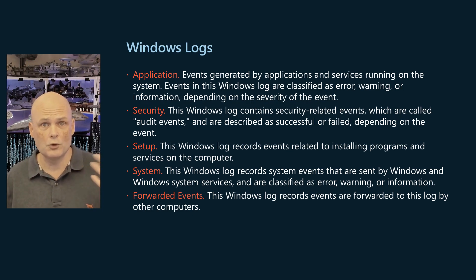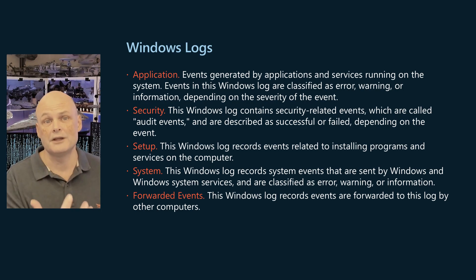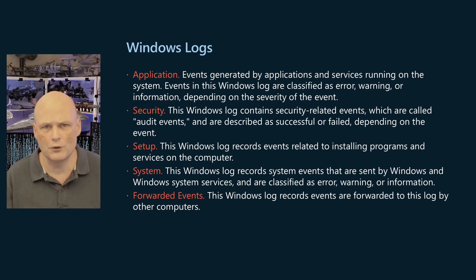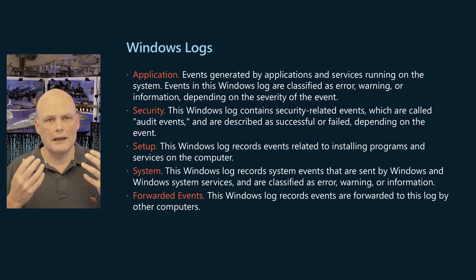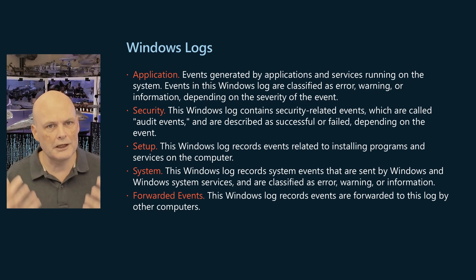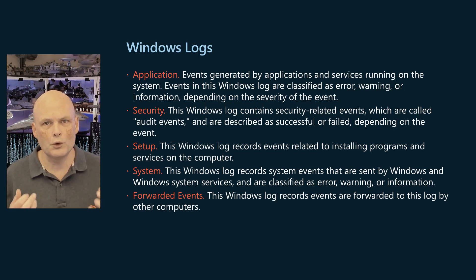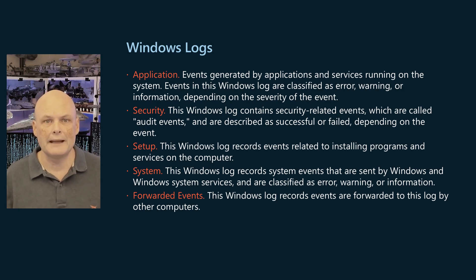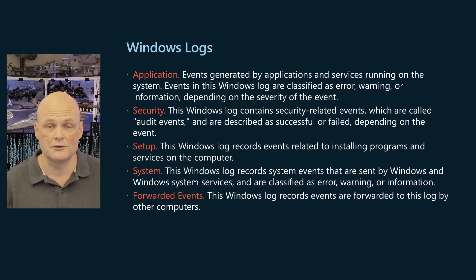The System Log records system events sent by Windows and Windows System Services and are classified as error, warning, or information using the same schema as before. Errors you really pay attention to, warnings you might have to pay attention to in future, and information — well, generally you don't look at those unless you're in a lot of trouble.